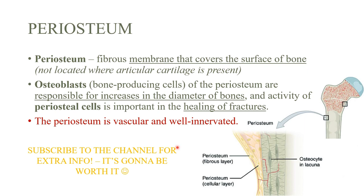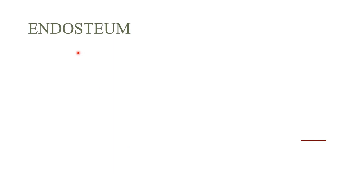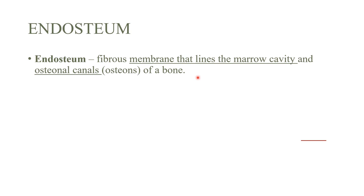The periosteum is vascular and well innervated, meaning you can feel if something scratches against the bone, because of the nerves inside it. The endosteum is another membrane, but instead of being on the outside it lines the inside of the marrow cavity. The prefix 'endo' means inside, so it lines the marrow cavity and the internal canals within the bone.